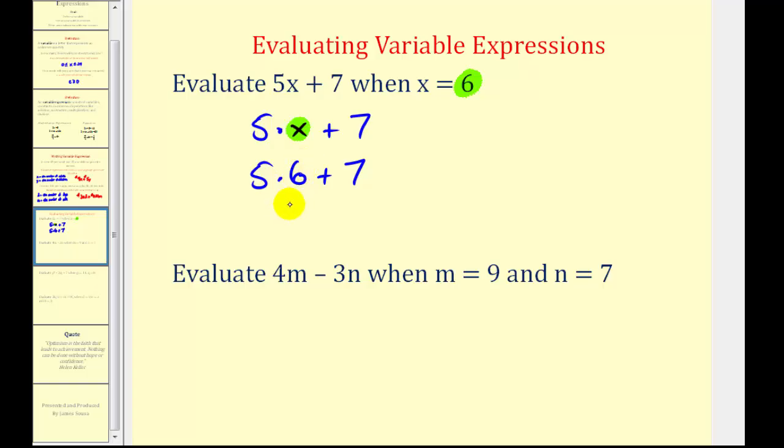We do have to remember to evaluate this, we have to follow the order of operations. So we'll multiply first, 5 times 6 would be 30. So 30 plus 7, so the expression is equal to 37 when x is equal to 6.